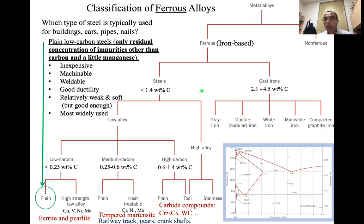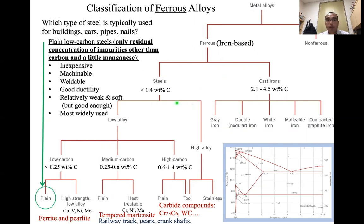Let's continue discussing alloys. Last time we talked about ferrous alloys and non-ferrous alloys. For ferrous alloys, we have steel when the carbon concentration is less than 1.4 percent, and for cast iron when the carbon concentration is between 2.14 and 4.3 weight percent.